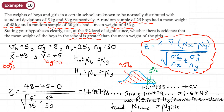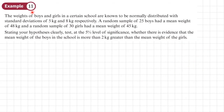Comparing our calculated test statistic Z = 1.6480 with the critical value 1.6449, our Z is greater than the critical value. This means Z falls in the critical region, so we reject H0. There is evidence to suggest that the mean weight of the boys is greater than the mean weight of the girls.